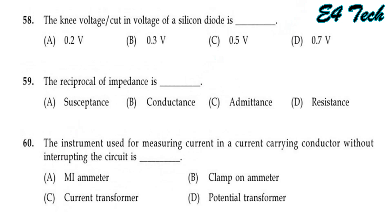Next, the knee voltage — the cut-in voltage of a silicon diode. Silicon diode's knee voltage is 0.7V and germanium is 0.3V. Option D.